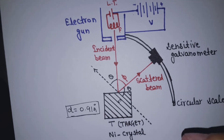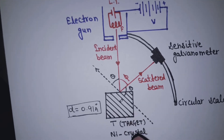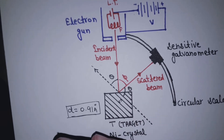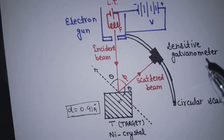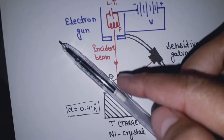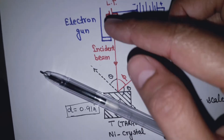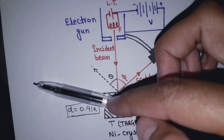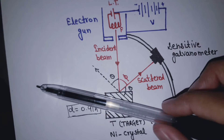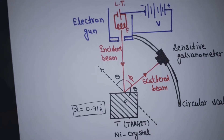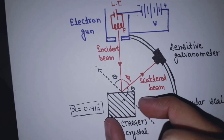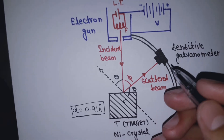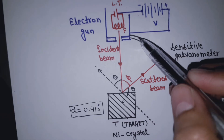You can measure in two ways. The first is that the nickel crystal is stationary and the collector rotates in different directions to measure reflection at various angles. But in our experiment, we fix the crystal and vary the voltage, noting the number of electrons at different positions.